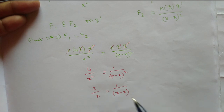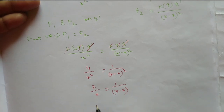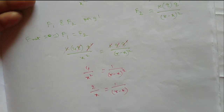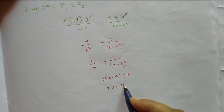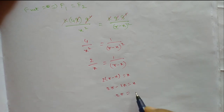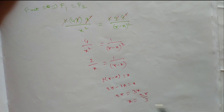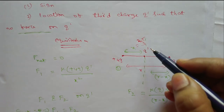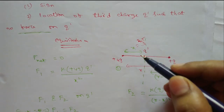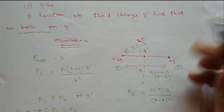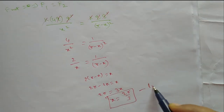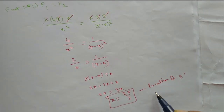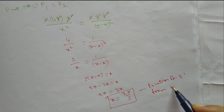Taking the square root of both sides gives 2 divided by x equals 1 divided by (r minus x). Solving for x: 2 times (r minus x) equals x, so 2r minus 2x equals x, giving 2r equals 3x, and therefore x equals 2r by 3. So q dash is located at x equals 2r/3 from the plus 4q charge, and it will remain in equilibrium state.